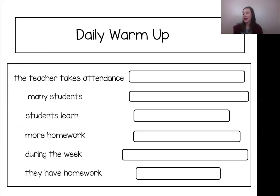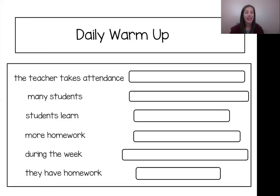Great job, guys. Now let's take our phrases and clauses and make them complete sentences. Take a minute to look over our phrases and clauses from the last slide. What do we need to do to make them complete sentences? We need a subject and verb in each one. We also need capital letters at the beginning and punctuation at the end. Now, will everyone's sentences look the same? No, and that's okay.